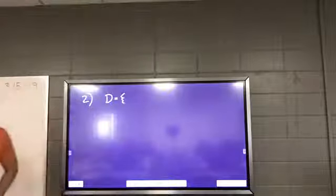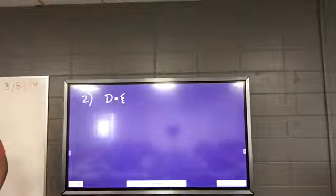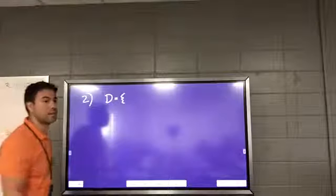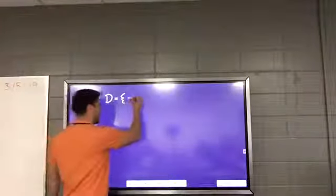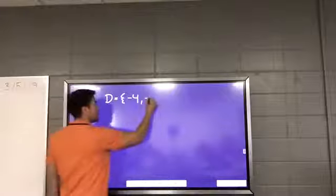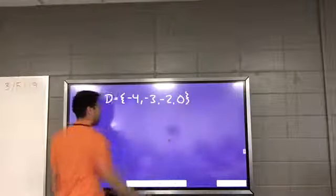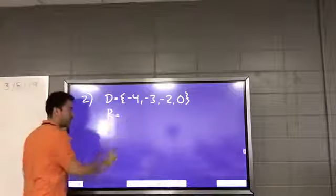All right, Hudson, what's your domain? Zero, negative two, negative three, negative four. Okay, those are the values, but how do I want it listed? From the biggest number to the greatest. I want from least to greatest. So it would be negative four, negative three, negative two, zero. I want least to greatest, and then your range, same thing, least to greatest.